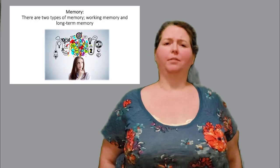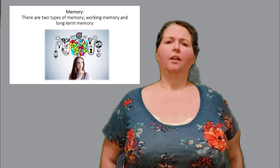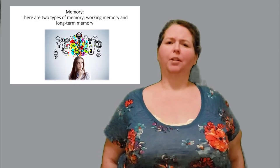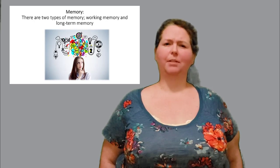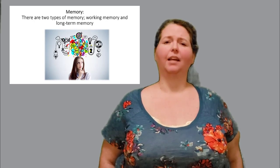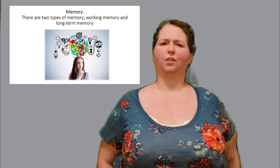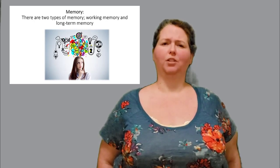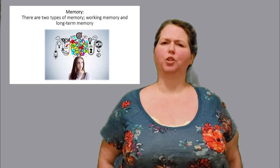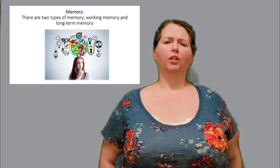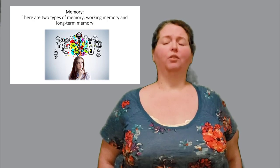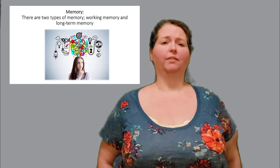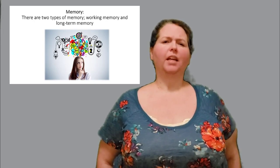There are two types of memory: working memory and long-term memory. Working memory has limited capacity and we can only hold a certain amount of information for a short amount of time. Long-term memory is the part of the brain where we store information for a long period of time.